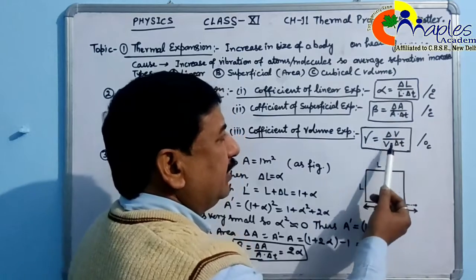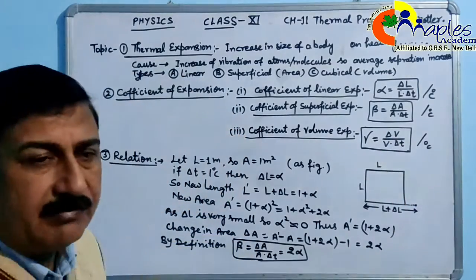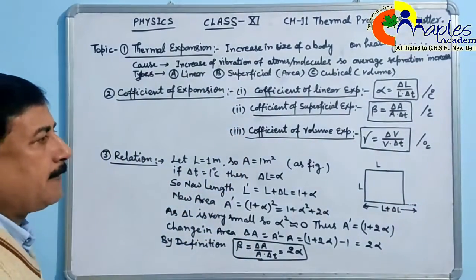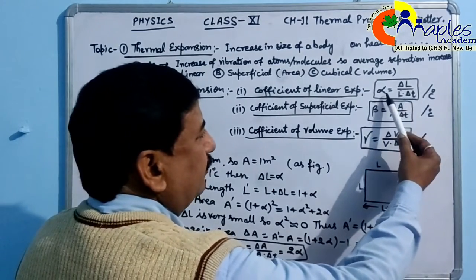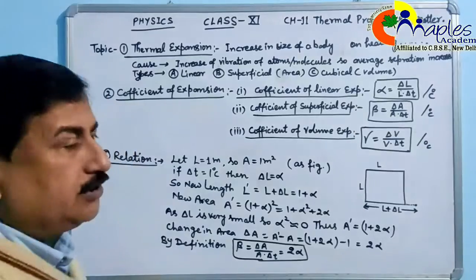Similarly for area and volume, we have alpha, beta, and gamma—three coefficients. If the original length is 1 and temperature change is 1 degree, then the coefficient equals the change in length.